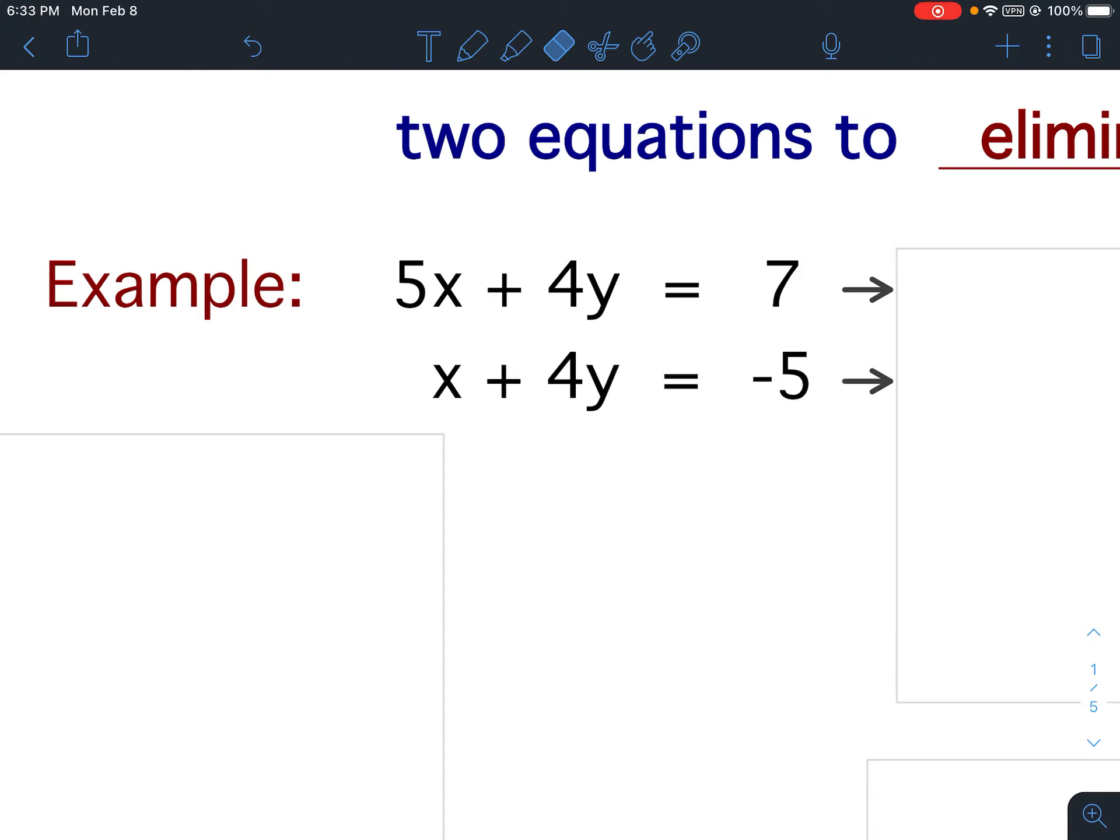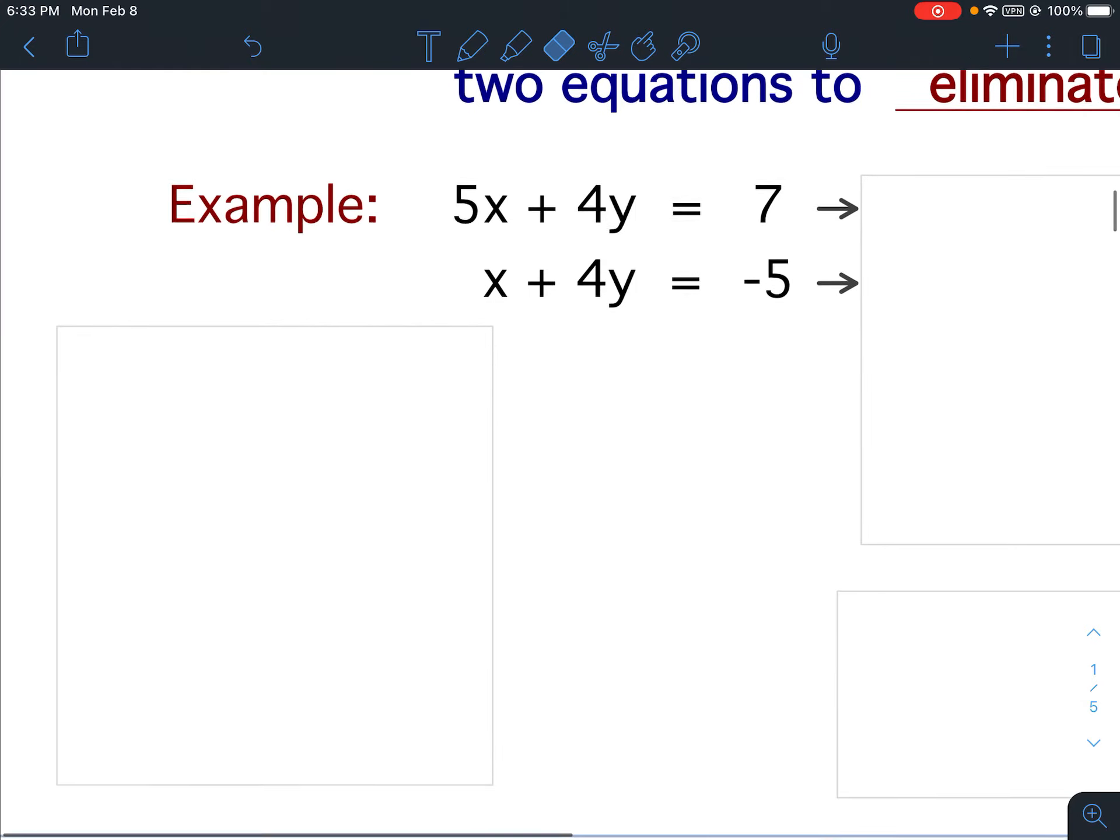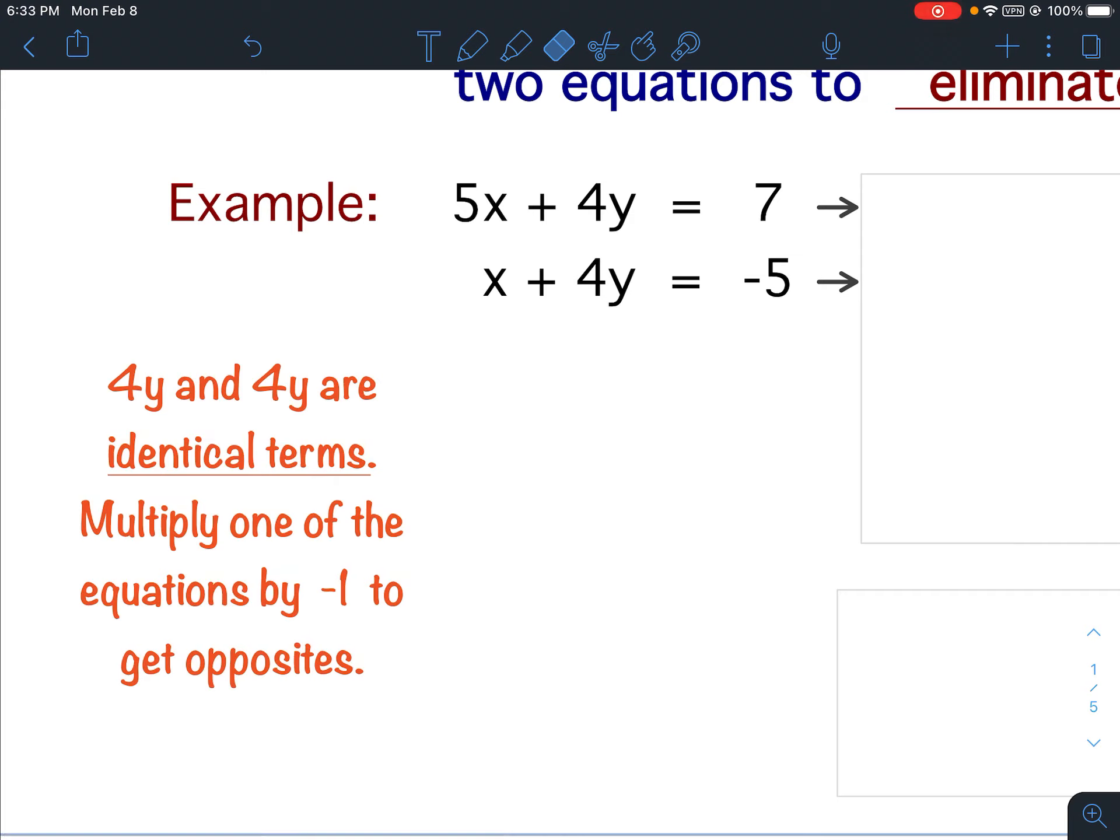I have positive 4y and positive 4y, but they are not opposites. In order to have opposites, one of them has to be positive and one has to be negative. Those two terms are called identical terms. To make one of them negative, we simply multiply by negative 1.